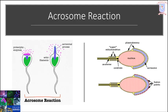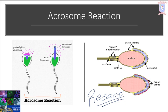Diffusible compounds or chemoattractants such as resact from the outer layer of egg jelly influence sperm swimming in many marine invertebrates. In the last class we discussed how chemoattraction takes place in sea urchin with respect to the resact concentration. For more details, watch the previous videos.